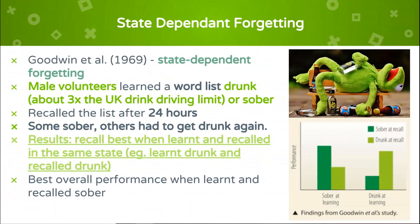State refers to bodily cues inside us — a particular physical state such as fatigue, emotional state, or the state of being drunk. The basic idea behind state-dependent retrieval is that memory will be best when a person's physical or psychological state is similar at encoding and retrieval. Goodwin (1969) demonstrated state-dependent forgetting by asking male volunteers to learn a word list while either drunk — about three times the UK drink-driving limit — or sober.